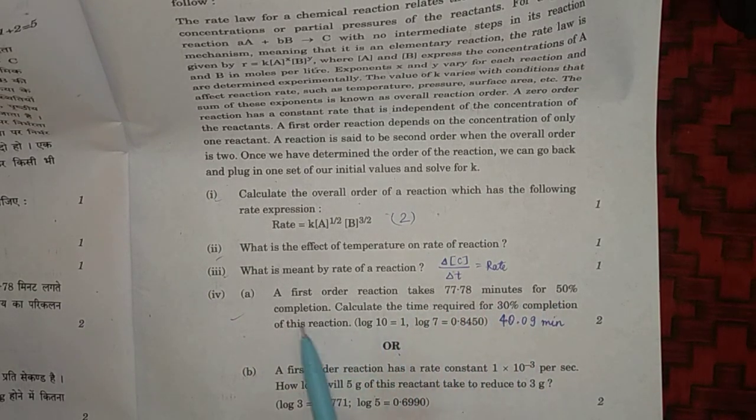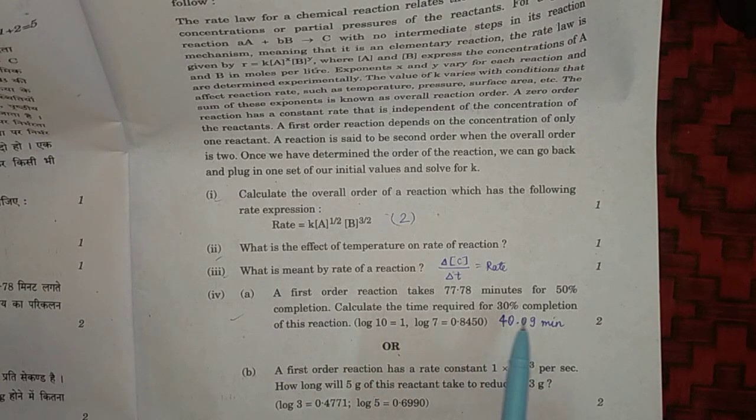Fourth question: a first order reaction takes place in 77.78 minutes for 50% completion, calculate time required - the answer will be 40 minutes. Thank you.